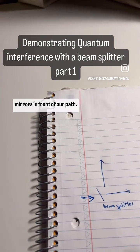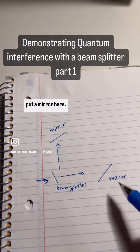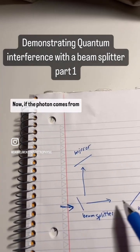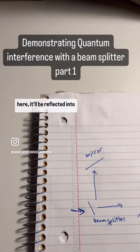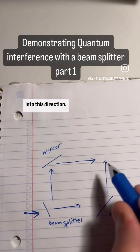Next, let's put a couple of mirrors in front of our path. So I put a mirror here and I put a mirror here. Now if the photon comes from here, it'll be reflected into this direction. And if the photon comes from this mirror, it will be reflected into this direction.